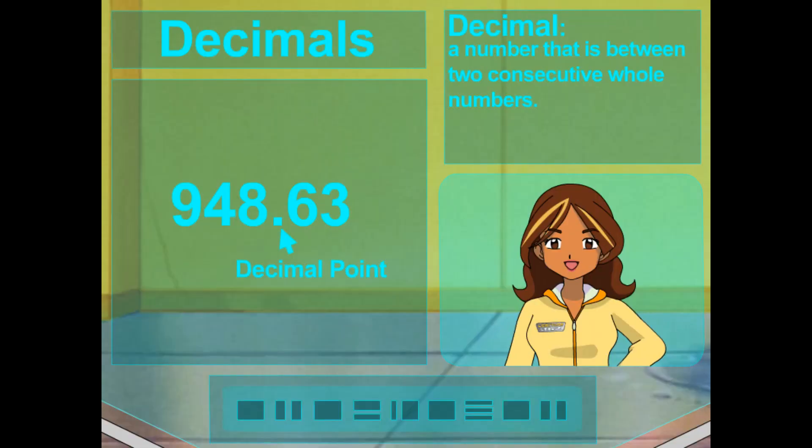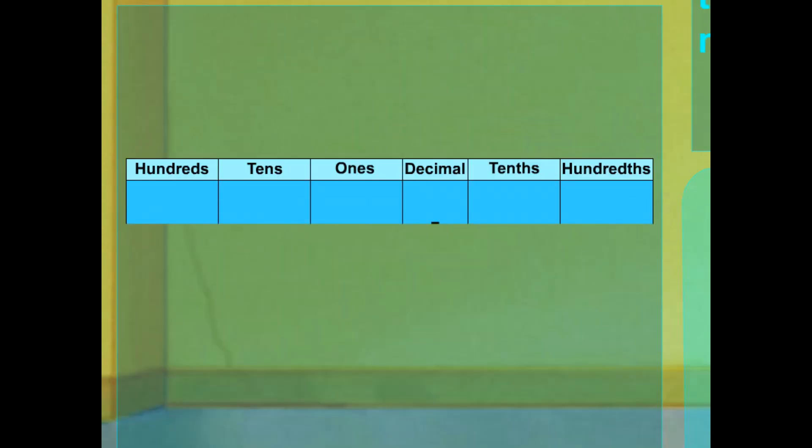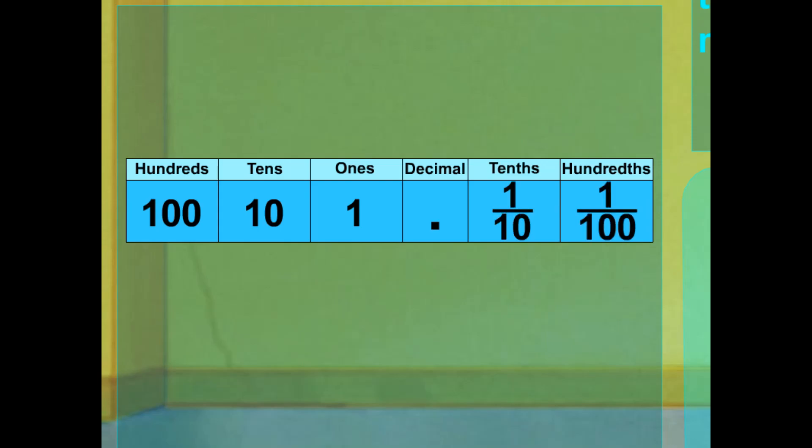You can tell the value of a decimal by its decimal point. It divides the whole number part from the decimal part. Here, let me show. Just as each place to the left increases by 10, each place to the right of the decimal point is also a multiple of 10. So, the first number to the right of the decimal point represents a tenth of one whole. Then, the next place over to the right is one hundredth of one whole. And then the next is one thousandth of one whole, and then...